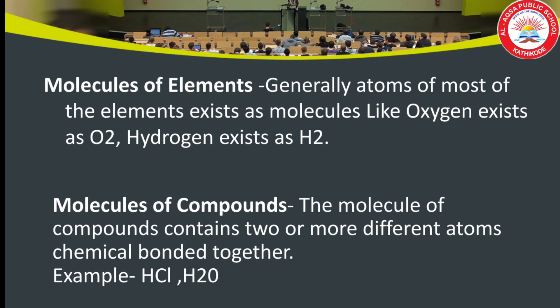Molecules are of two types: molecules of elements and molecules of compounds. Molecules of an element are constituted by the same type of atoms. For example, oxygen and hydrogen exist as H2 — two same atoms. The molecule of compounds contains two or more different atoms chemically bonded together. For example, HCl consists of one atom of hydrogen and one atom of chlorine. Similarly, water consists of two atoms of hydrogen and one atom of oxygen.